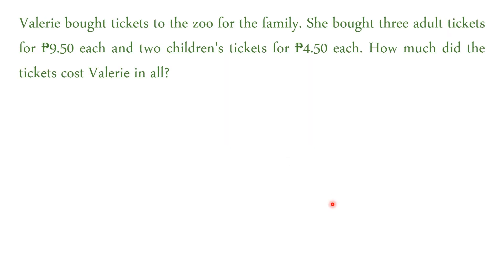So another problem that involves real numbers, for example, is like this. So Valerie bought tickets to the zoo for the family, she bought three adult tickets for 9.50 pesos, and two children's tickets for 4.50 pesos each. How much did the ticket cost Valerie in all? So we can write it in this way. We have three of the 9.50, because there are three adults, and two of 4.50, because there are two children. And then we can convert these words into operations, mathematical operations.